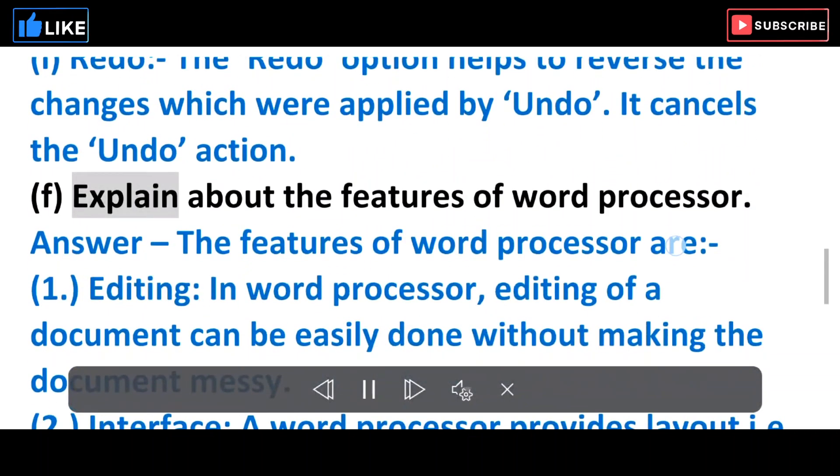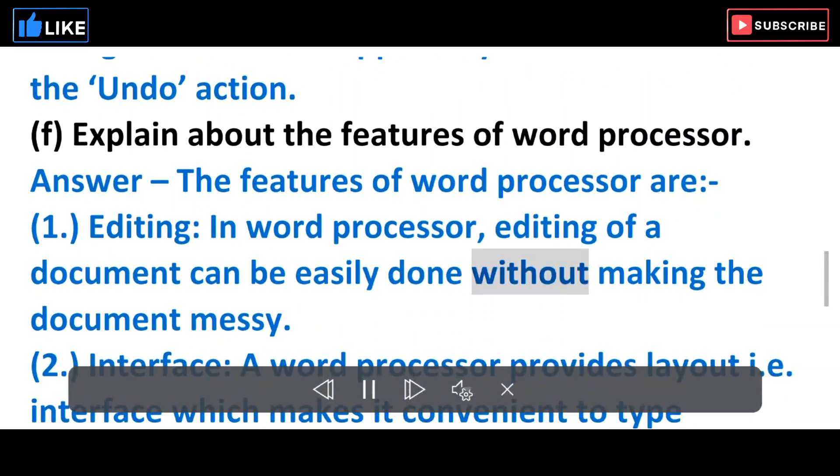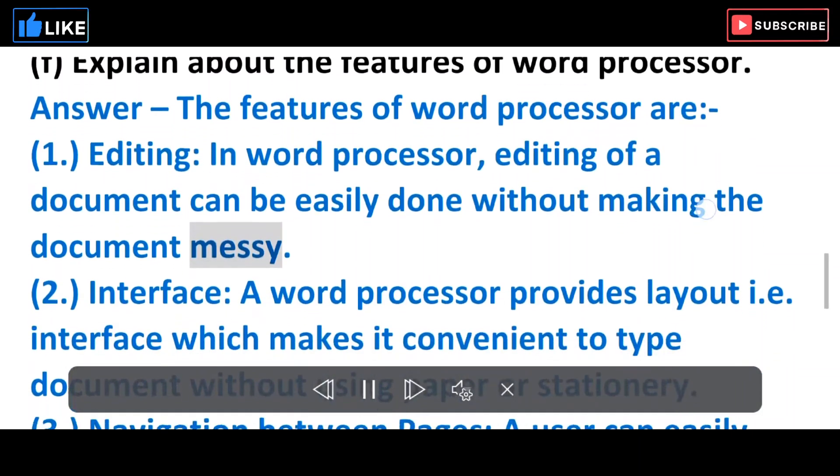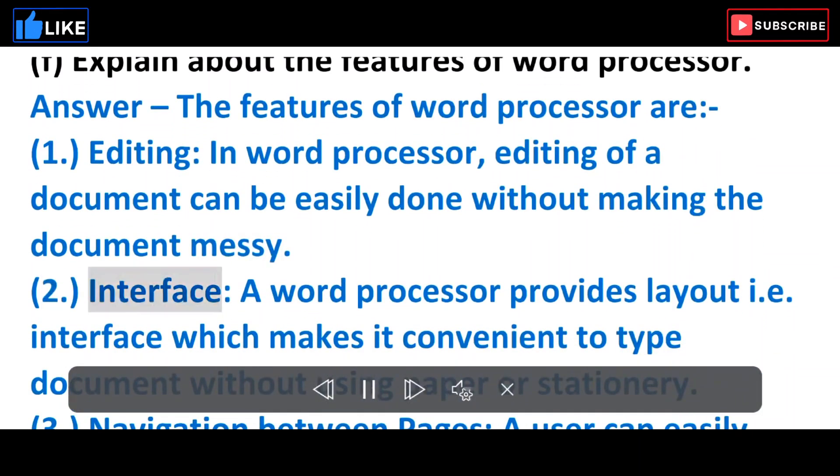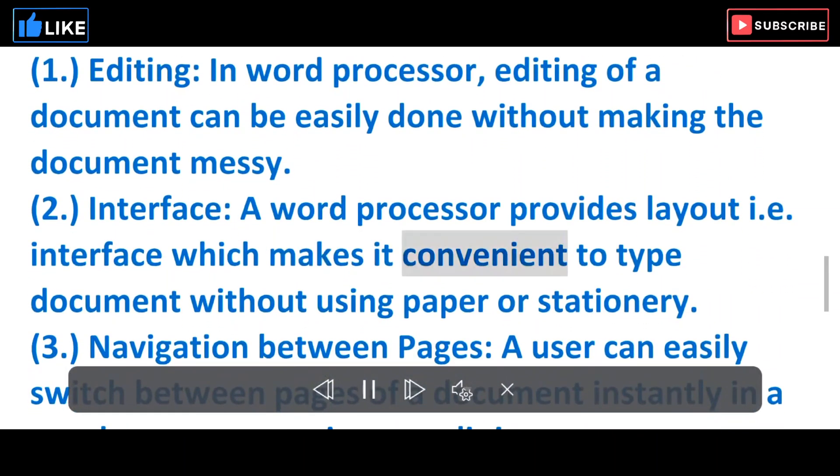F. Explain about the features of word processor. Answer: The features of word processor are: 1. Editing - In word processor, editing of a document can be easily done without making the document messy. 2. Interface - A word processor provides layout interface which makes it convenient to type document without using paper or stationery.